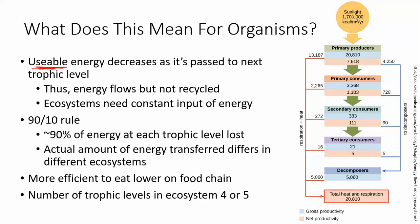Organisms like primary producers take in energy from the sun — let's say 20,810 kilocalories per meter squared per year. Only 3,368 gets passed on to primary consumers. They use some of that energy; a lot is used for respiration, lost to heat, or used to perform tasks. About 383 kilocalories move on to the next trophic level. It's not exactly 10% at each trophic level — that's just an approximation and average.